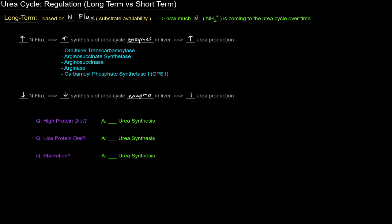And of course, the opposite is true. If there's a decrease in nitrogen flux, there's going to be a decrease in the synthesis of the urea cycle enzymes in the liver. And thus, we'll have a decrease in urea production because we won't be producing as much urea if there's not a lot of NH4 plus to be processed and turned into urea.